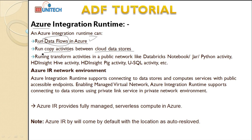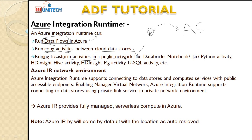We can use copy activities — as we have already used — to move data from one cloud storage to another. For example, if we have Blob Storage and we want to move data from Blob Storage to Azure SQL, we can do that using Azure IR. Next, we can also run transform activities in the public network.